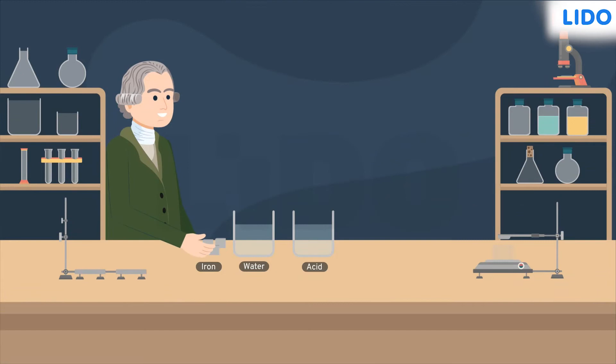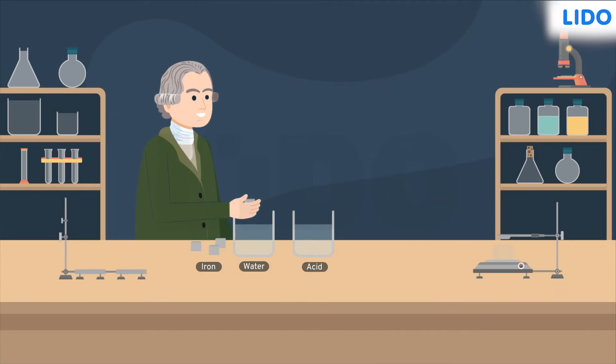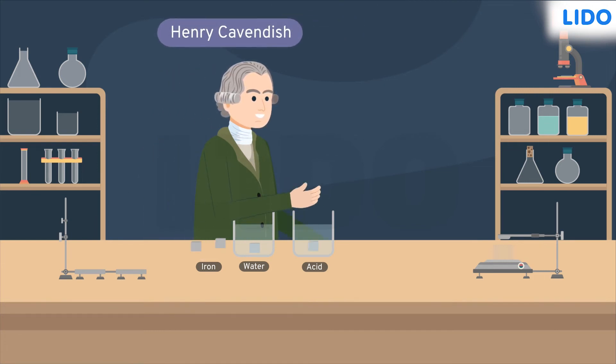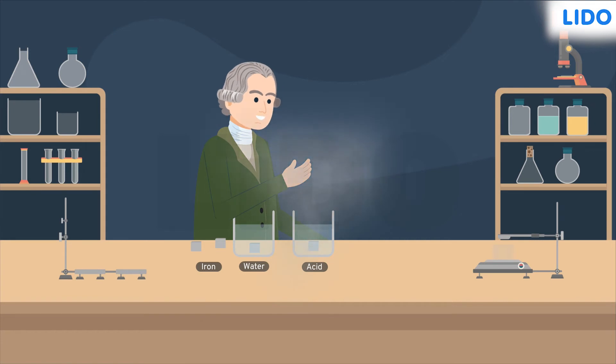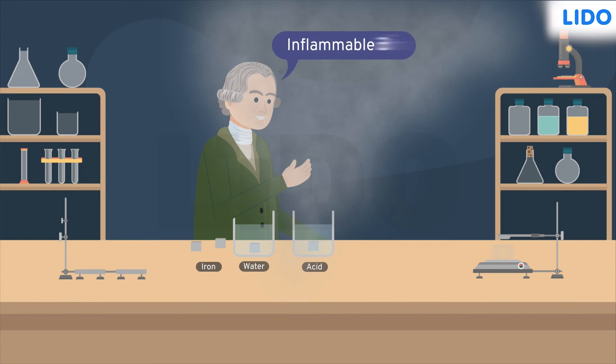Did you know hydrogen was discovered accidentally? Yes, in 1766 a British scientist Henry Cavendish, while experimenting with acid and iron, observed production of a gas. He called the gas inflammable air.